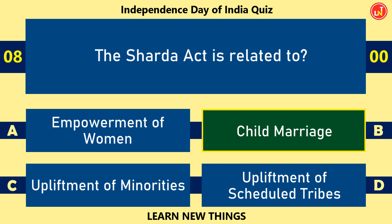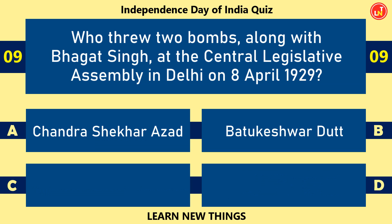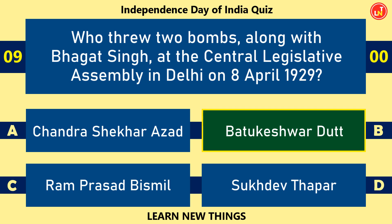Who threw two bombs along with Bhagat Singh at the Central Legislative Assembly in Delhi on 8 April 1929? Batukeshwar Dutt.